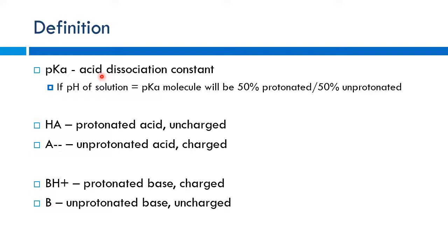Our goal when absorbing a drug is to get it into the least charged, most lipophilic state. For a weak acid, the protonated form (with an extra hydrogen ion) is the uncharged state — this crosses membranes easily. The deprotonated form (A-) is charged and doesn't cross well. For weak bases, BH+ is the protonated, charged form — it bounces off membranes — while B (unprotonated) is uncharged and can be absorbed. So weak acids in acidic solutions and weak bases in basic solutions get absorbed best — like dissolves like.